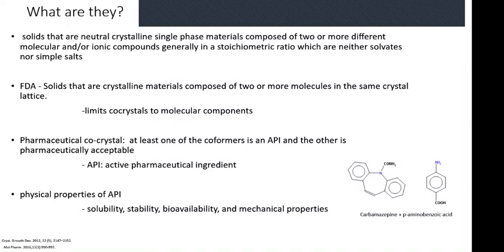When you solve the asymmetric unit, you're going to have multiple different types of molecular or ionic compounds. They classify these as compounds because if you have a solvent, that's usually referred to as a solvate, which is a special type where solvent crystallizes in the lattice, or simple salts. From the FDA's point of view, it's two or more molecules in the same crystal lattice — that makes it a co-crystal, limited to molecular components.